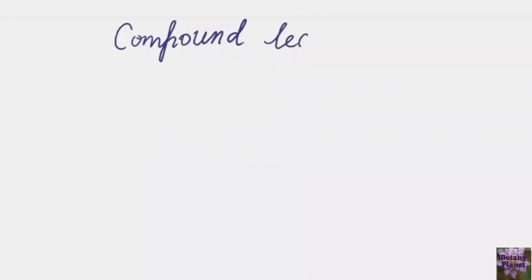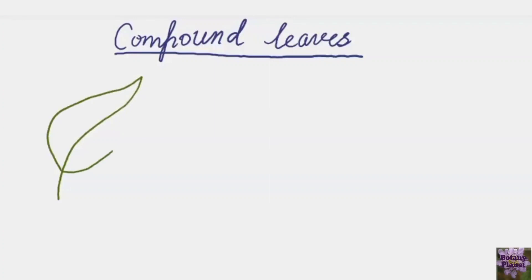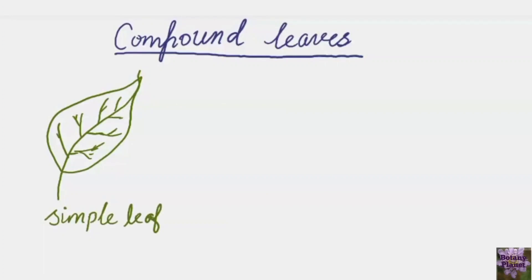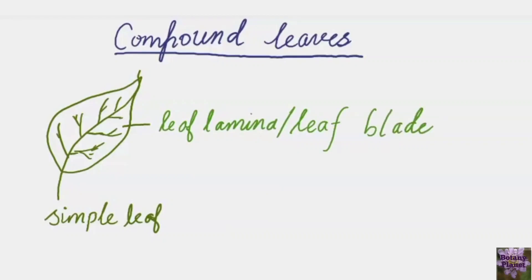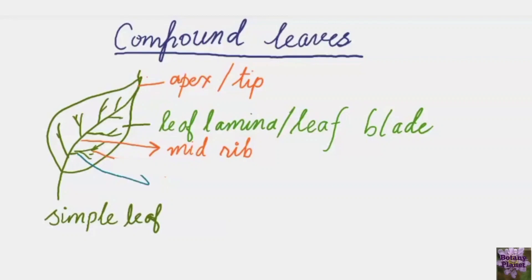Today we are studying about compound leaves. To understand compound leaves, we first need to look at the structure of a simple leaf. Drawing the structure of a simple leaf, we have the petiole and leaf lamina — this is the leaf lamina or leaf blade. This part is called the apex or tip of the leaf. As the petiole enters the leaf, it is called the midrib, and the branches rising from the midrib are called veins.